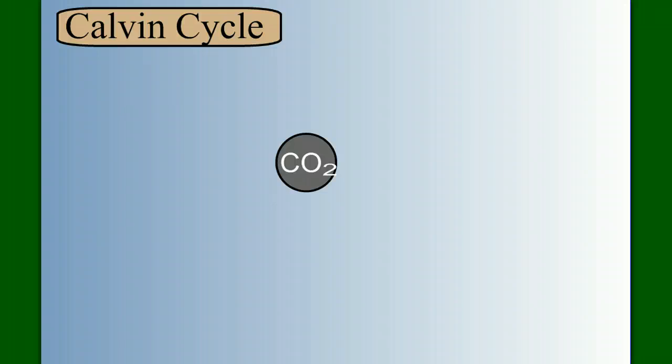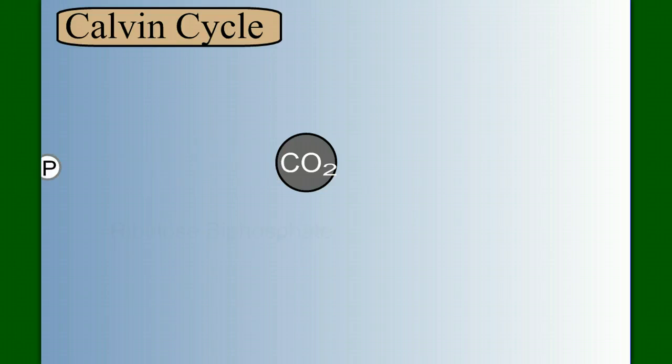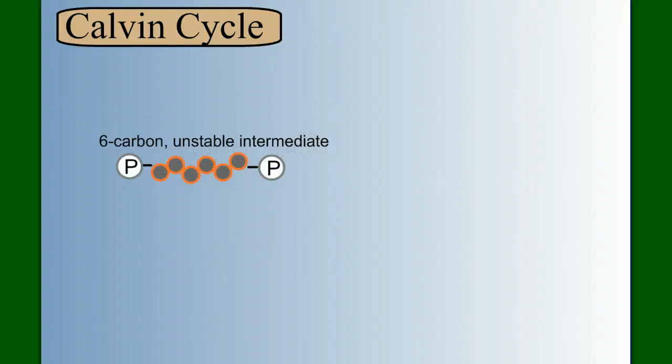Here we have carbon dioxide from the atmosphere, diffusing into the leaf and into a cell and into the stroma of the chloroplast, where it encounters a molecule called RUBP, or ribulose biphosphate, R-U-B-P. When RUBP binds with carbon dioxide, it forms a molecule that's a six-carbon unstable intermediate. And because it's unstable, it immediately breaks apart into two, three-carbon molecules called PGA, or phosphoglycerate.